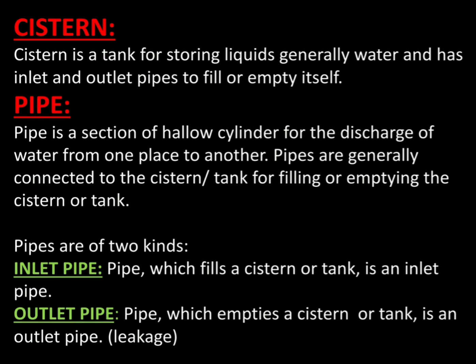Pipe. Pipe is a section of hollow cylinder for the discharge of water from one place to another. Pipes are generally connected to the cistern or the tank for filling or emptying the cistern or the tank.